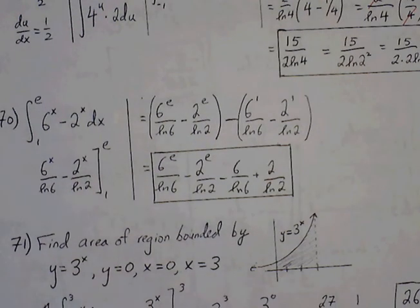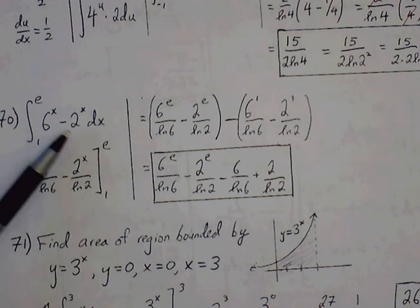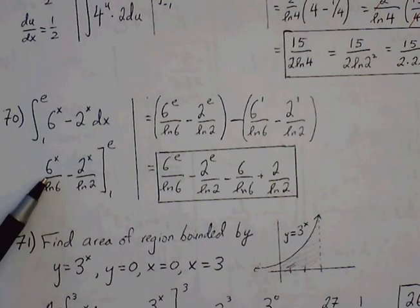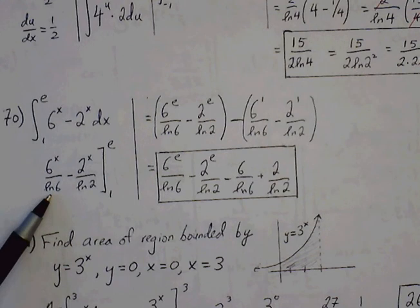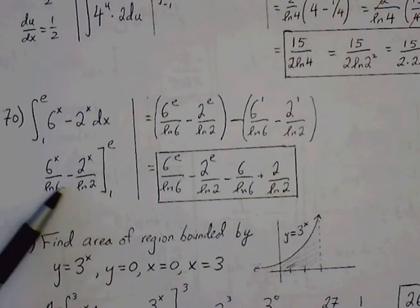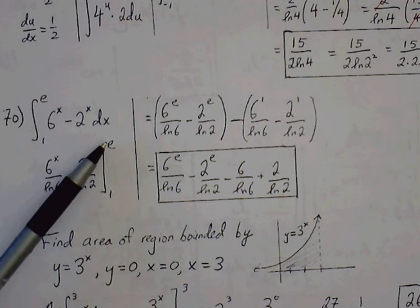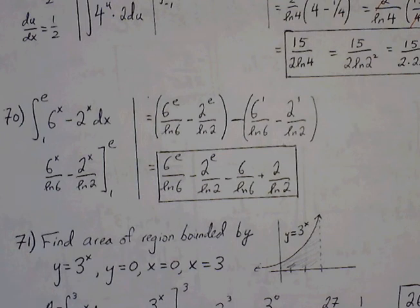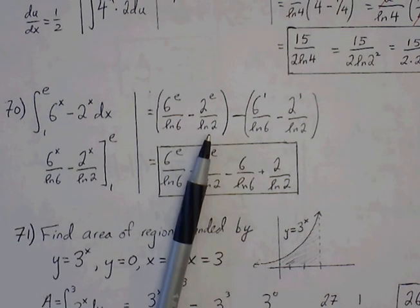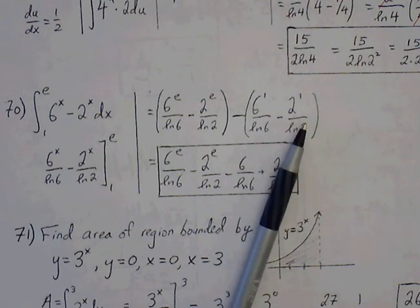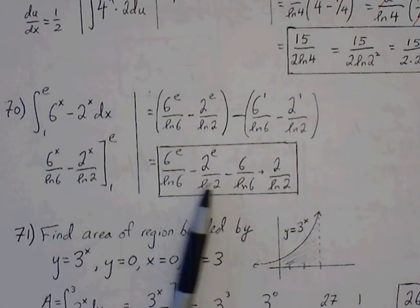Problem 70: definite integral of 6 to the x minus 2 to the x. This is already in the form a to the u with u = x, so no u-substitution is needed. The integral of 6 to the x is 6 to the x over ln of 6, and similarly 2 to the x over ln of 2. The bounds stay the same. Plugging in the upper bound e and then the lower bound 1, we get 6 to the e over ln 6 minus 2 to the e over ln 2, minus 6 to the first over ln 6, plus 2 to the first over ln 2. We can't simplify further, so we write all terms out separately.